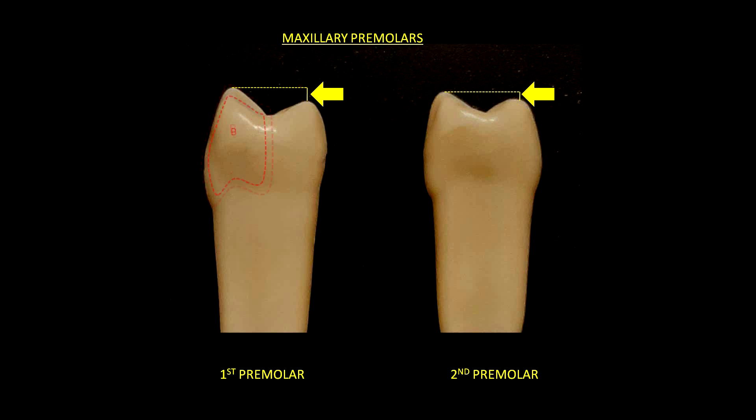We can see it in the first premolar and compare it to the lingual cusp, which is smaller. When we look at both cusps of the second premolar, the buccal cusp is also kind of bigger, but much closer to that of the lingual. If we divide by a mid axis, we can see that the buccal cusp of the first premolar is bigger than that of the lingual side. When we look at the cusps of the second premolar, they have nearly equal size; however, the buccal is slightly bigger than that of the lingual.